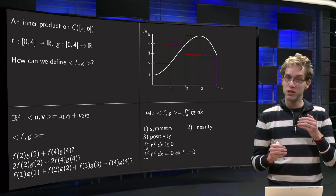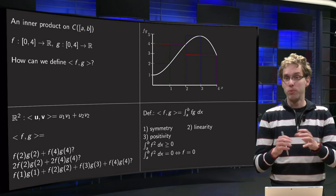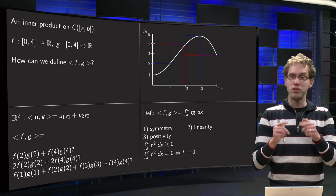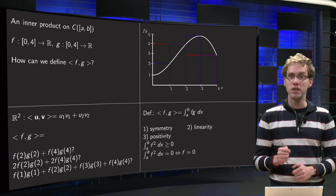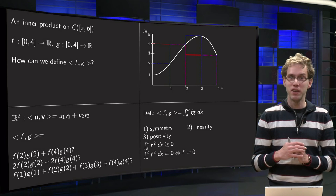So we take our inner product as the integral from a to b of fg dx. Well, we have to satisfy those three properties. Symmetry, integral f times g is of course the same as the integral of g times f, and linearity follows from the linearity of integrals.